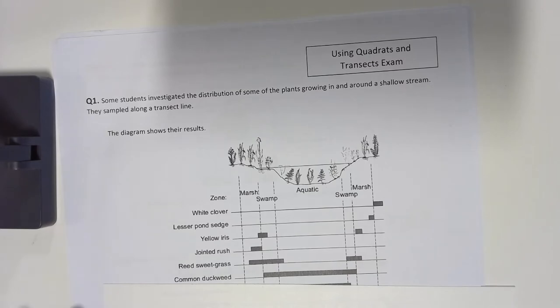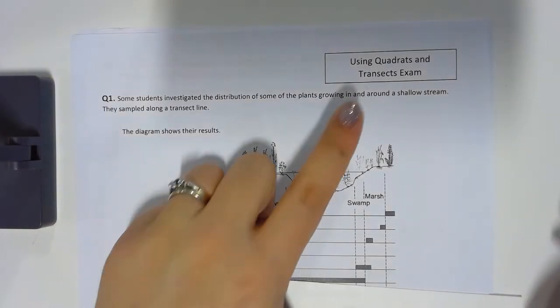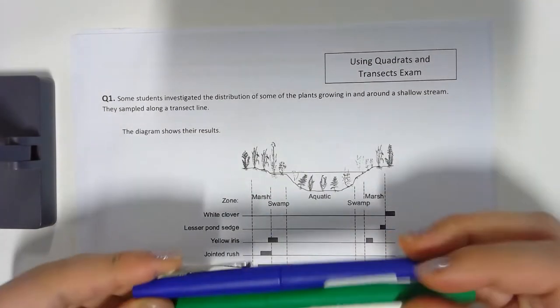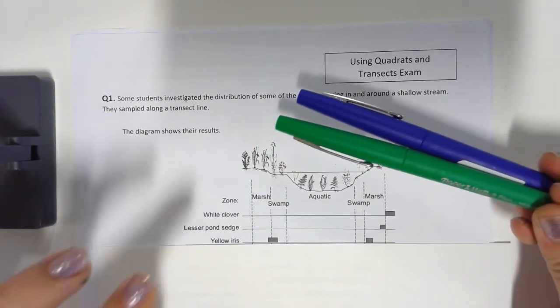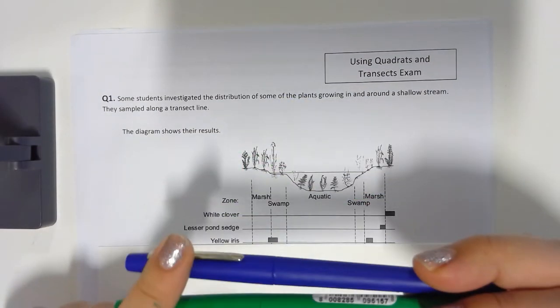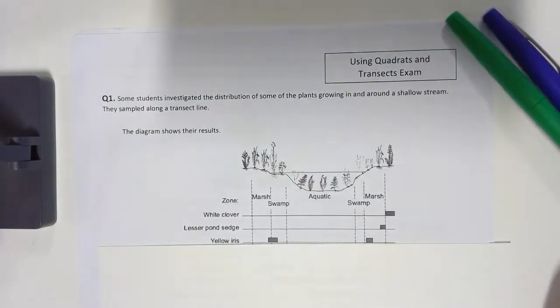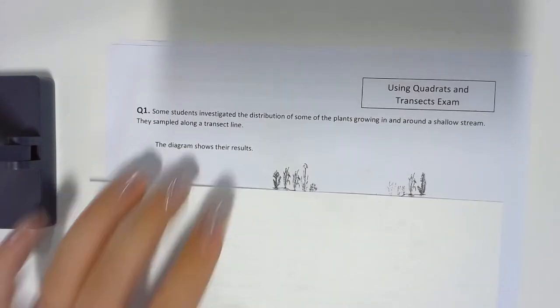Hello and welcome to this marking video on using transects and quadrats. Make sure you have your two color pens ready — your blue pen to write notes and your green pen to mark.